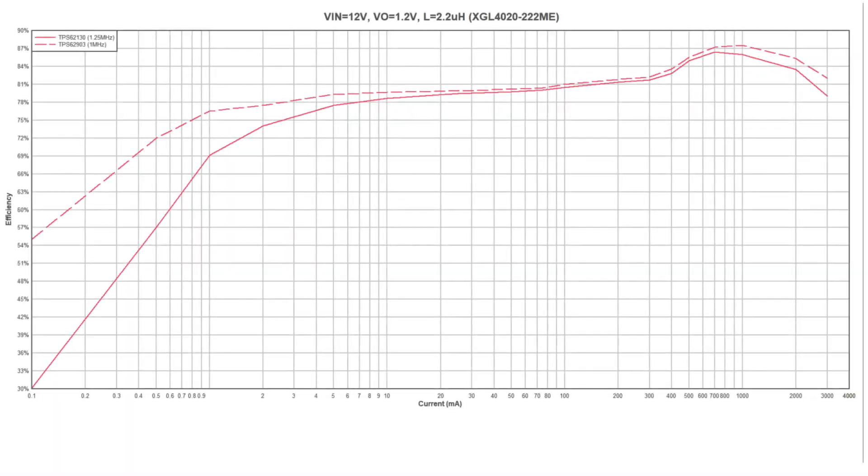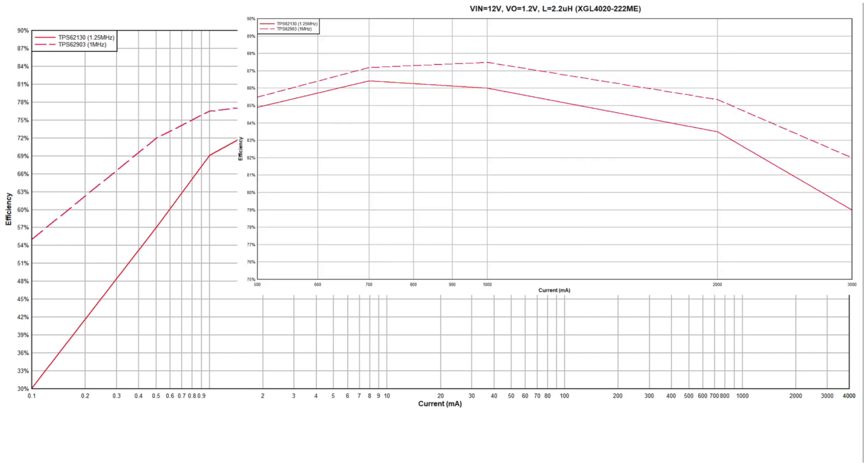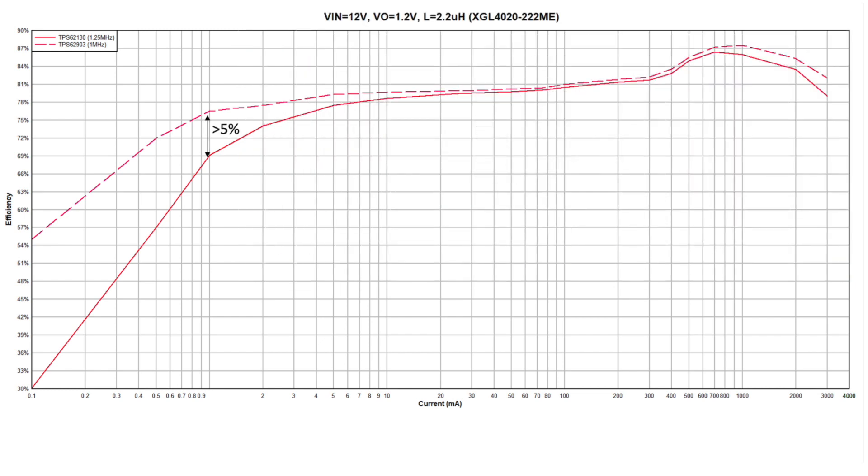These enhancements combine to provide a boost in efficiency when compared to previous generation devices such as the TPS62130, where the RDS on and the quiescent current are higher. This figure shows a comparison between the two devices and clearly shows the TPS62903's superiority across all load conditions. We see about 2 to 3 percent improvement in the 1 to 3 amp load range and 5 to 25 percent improvement for sub 1 milliamp load conditions.